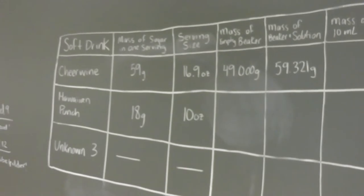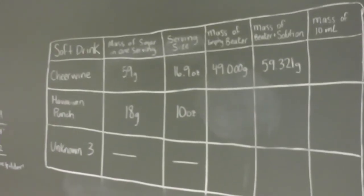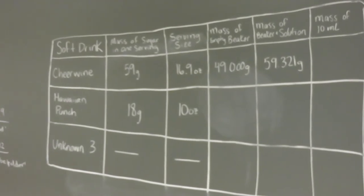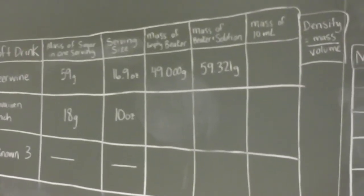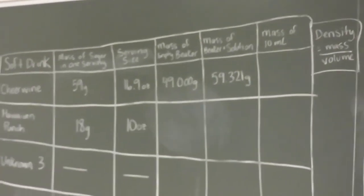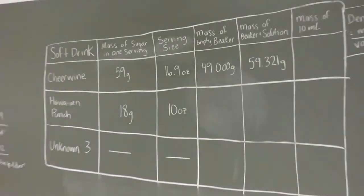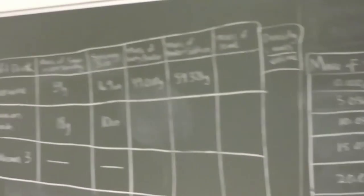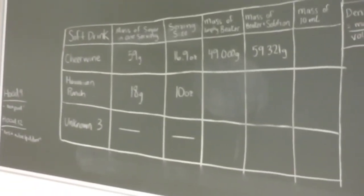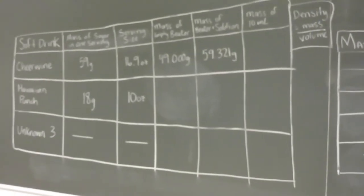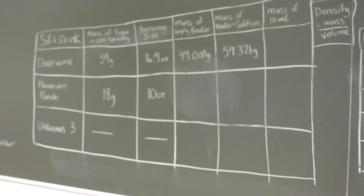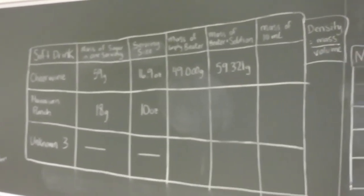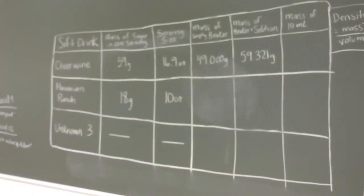And this is for Cheerwine. So the difference between the mass of the beaker and solution and the mass of the empty beaker will give you the mass of 10 milliliters of solution. And from there, you can calculate density using the calibration curve that you established and find out how accurate your solutions are. Don't forget that density is equal to mass over volume.